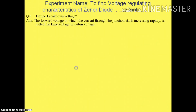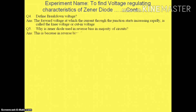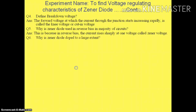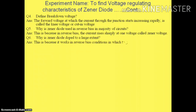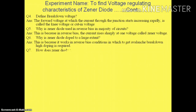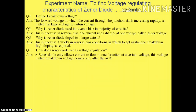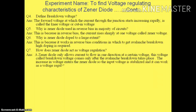Fifth question: why is Zener diode used in reverse bias in the majority of circuits? Because in reverse bias, the current rises sharply at one voltage called Zener voltage. Sixth question: why is Zener diode doped to a large extent? Because it works in reverse bias conditions, and to get avalanche breakdown, high doping is required. Seventh question: how does Zener diode act as a voltage regulator? A Zener diode only allows current to flow at a certain breakdown voltage, which comes after avalanche breakdown takes place.